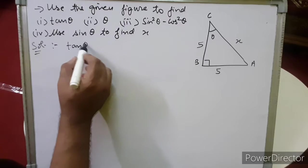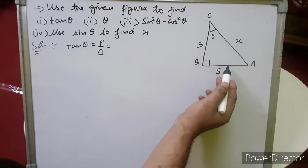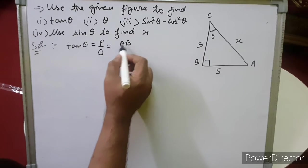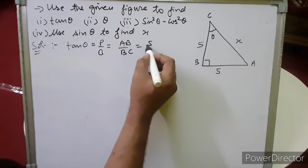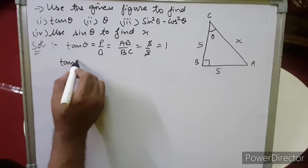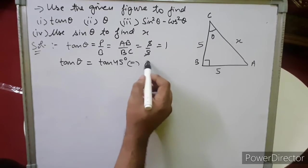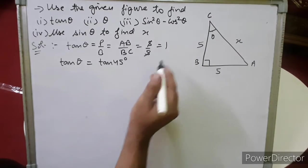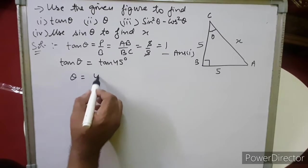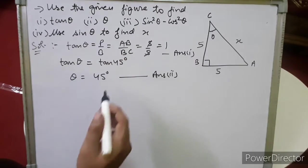Tan θ = perpendicular/base. Taking angle C as the reference angle, perpendicular is AB and base is BC, so tan θ = 5/5 = 1. In the table, tan 45° = 1, so by comparing, θ = 45°.